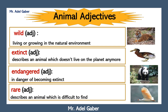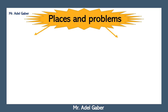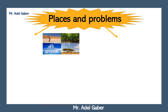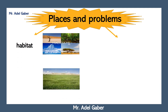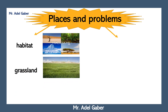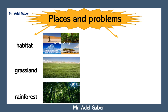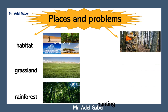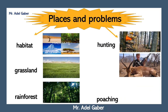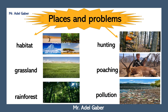Rare animals: describes an animal which is difficult to find, like this rare bird. Places and problems: places where animals live are called habitats, like grassland and rainforest. Problems that face animals include hunting and poaching — poaching is hunting without legal permission — and pollution.